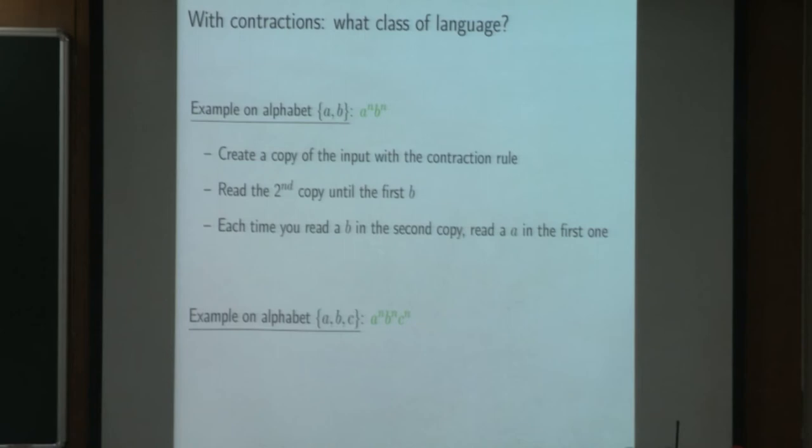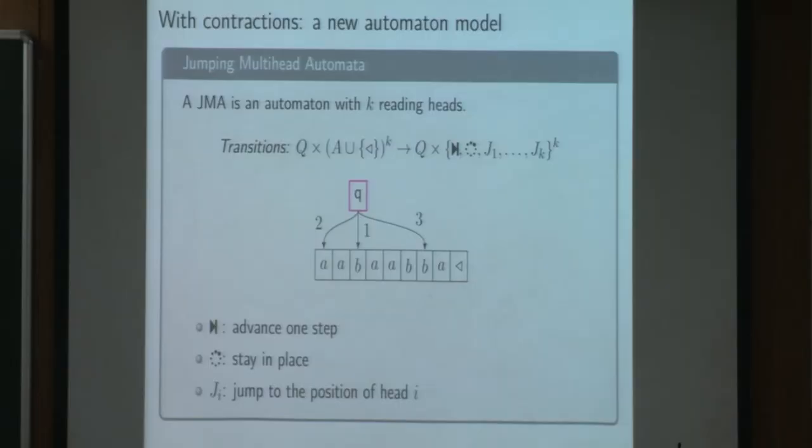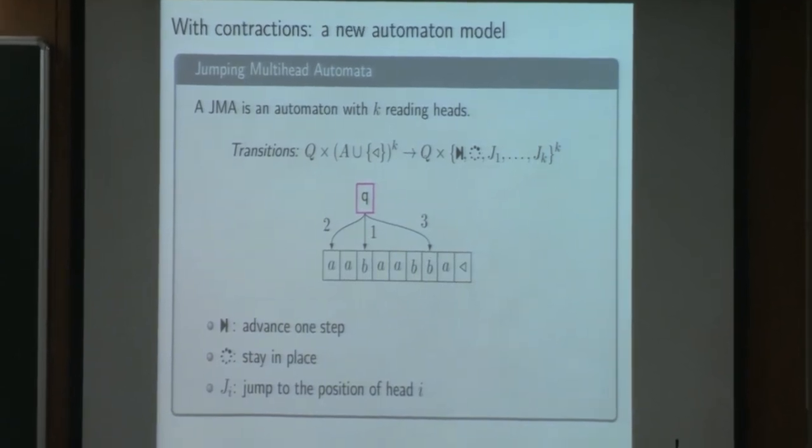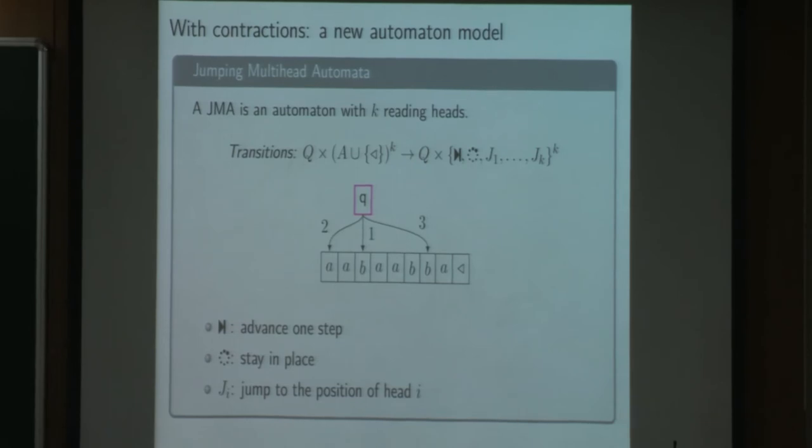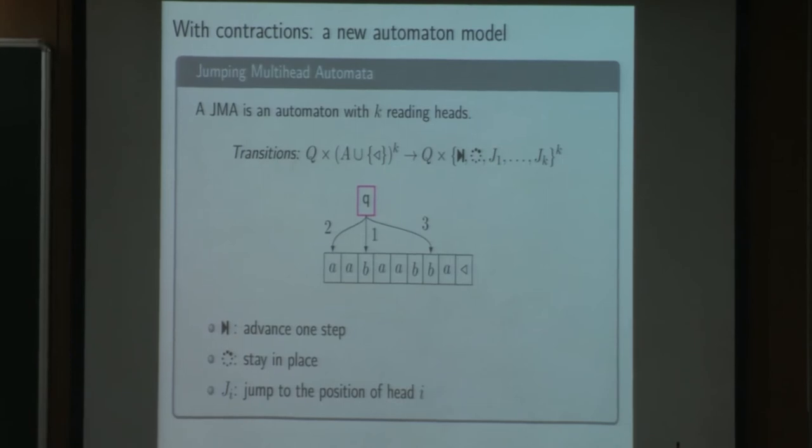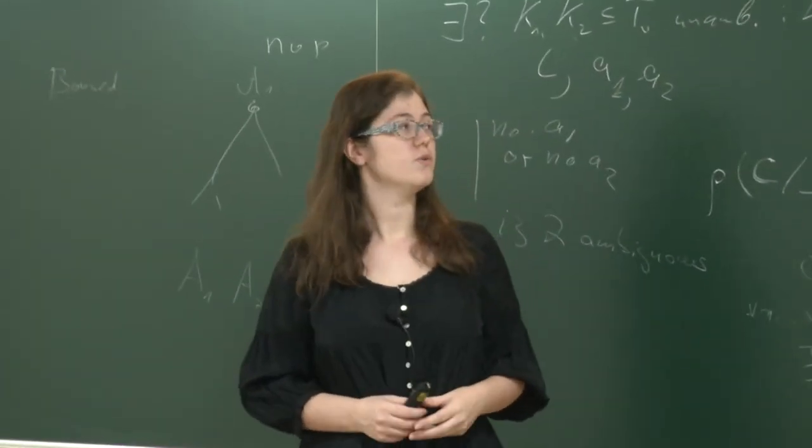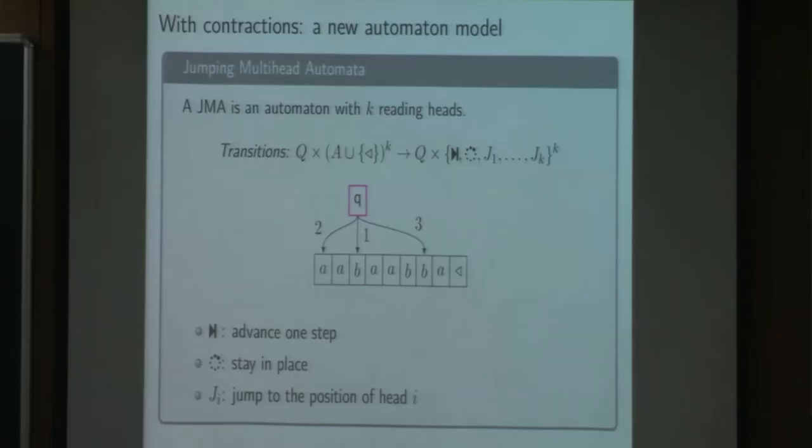And we introduced a new model of automaton to express in an automaton way what kind of languages we recognize. The contraction led us to the way of multi-head automata because we can create copies of the input word and read the same input word at the same time at different positions. The main difficulty was that the contraction rule can be located inside a loop in the proof. And so we cannot say before adding the input how many heads we will need. So we decided to mimic the behavior of the proof by allowing heads to be recycled, by allowing them to jump on the position of another head. And we call this model jumping multi-head automaton.